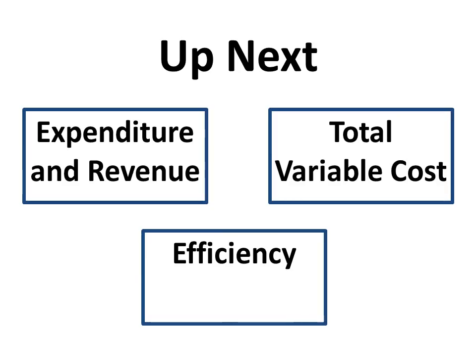So up next, we can talk about some other parts of these graphs, expenditures and revenues. We can also talk about total variable costs, finding that in these graphs. And we can also think about efficiency and what efficiency means.